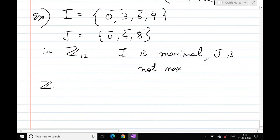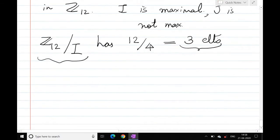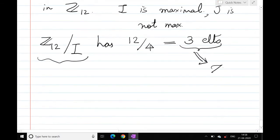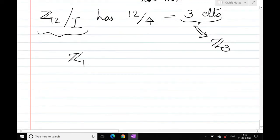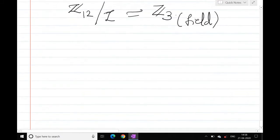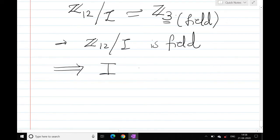So you want to take Z12 by I. As Z12 has 12 elements, I has 4 elements, so Z12 by I has 3 elements. Only one field has 3 elements, that is Z3. So we can show that Z12 by I is isomorphic to Z3, but Z3 is a field, it is Zp. This means Z12 by I is a field and therefore by the above theorem, I is a maximal ideal.